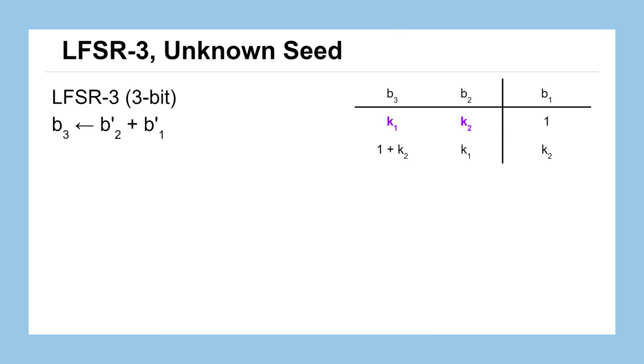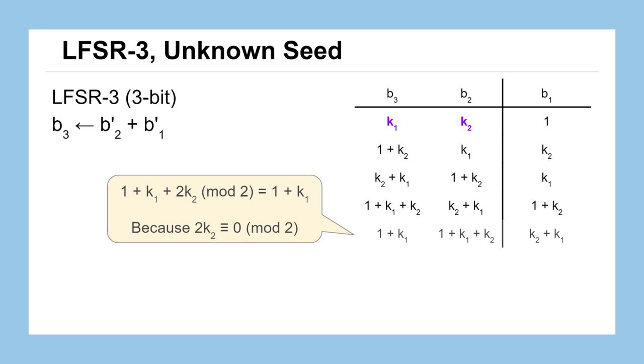Here we'll see that this pattern in column 3 for bit 3, we can simplify using rules of modular arithmetic. Normally we would take the preceding value for bit 1, which is 1 plus k2, add that to the value for bit 2, which is k1 plus k2, and when we combine like terms, we would have had the expression 1 plus k1 plus 2 times k2. But if we were to mod that expression by 2, it would simplify down to just 1 plus k1, because we know that doubling k2 and then taking the mod 2 of that will always result in that being equivalent to 0.